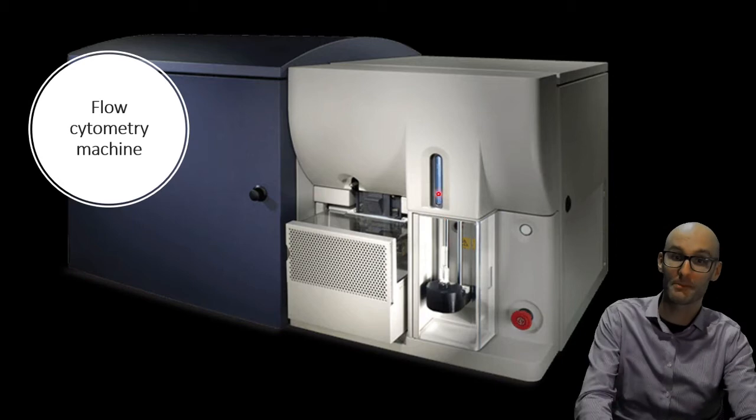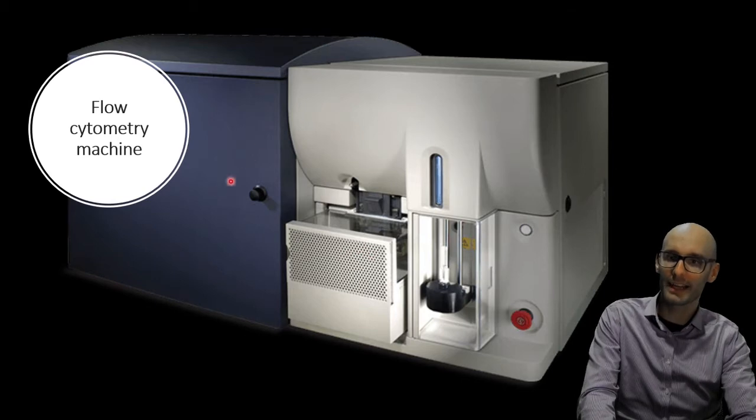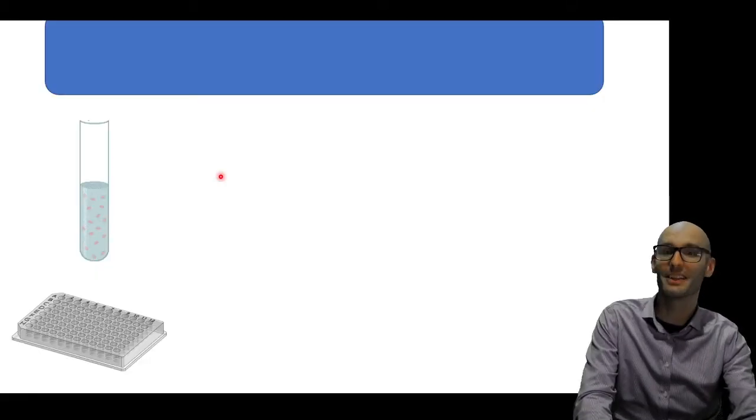Let's jump into it. Here's a flow cytometry machine. It's very, very cool. Now it's going to suck the liquid up into here or into here, and then it runs that liquid into this giant machine here to run the assay.